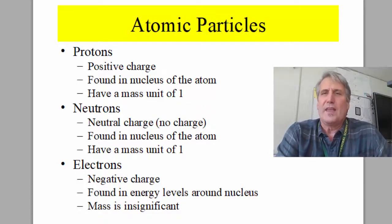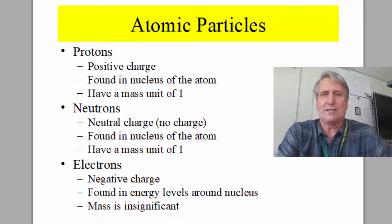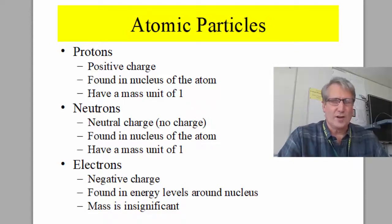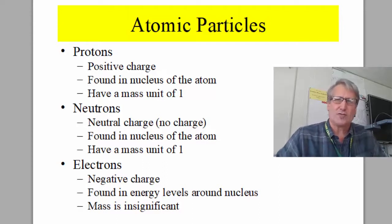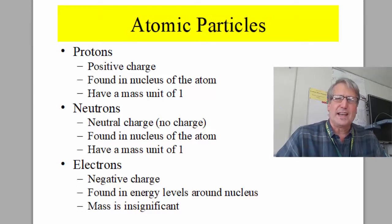Electrons, the third particle, are negatively charged. They are found in energy levels outside the dense nucleus, and they have insignificant mass. Now before we get into making a Bohr model, let me say that these Bohr models are very primitive. Our understanding of atoms and how to represent the electrons around the outside of the nucleus has greatly advanced since Bohr models were first used. But it's still useful for beginners in chemistry to understand how to make and represent an atom with a Bohr model.